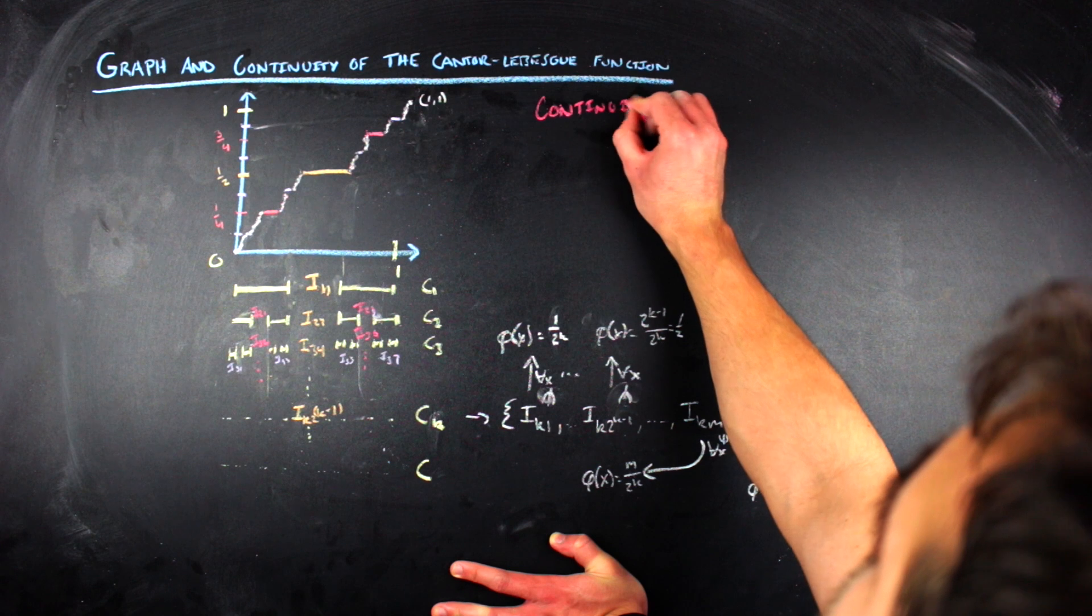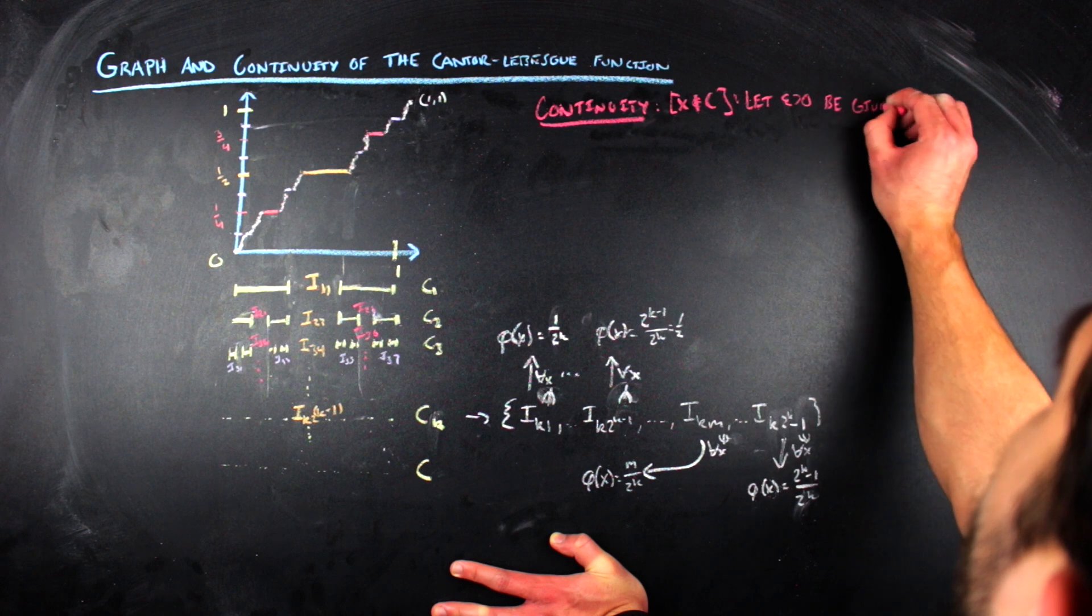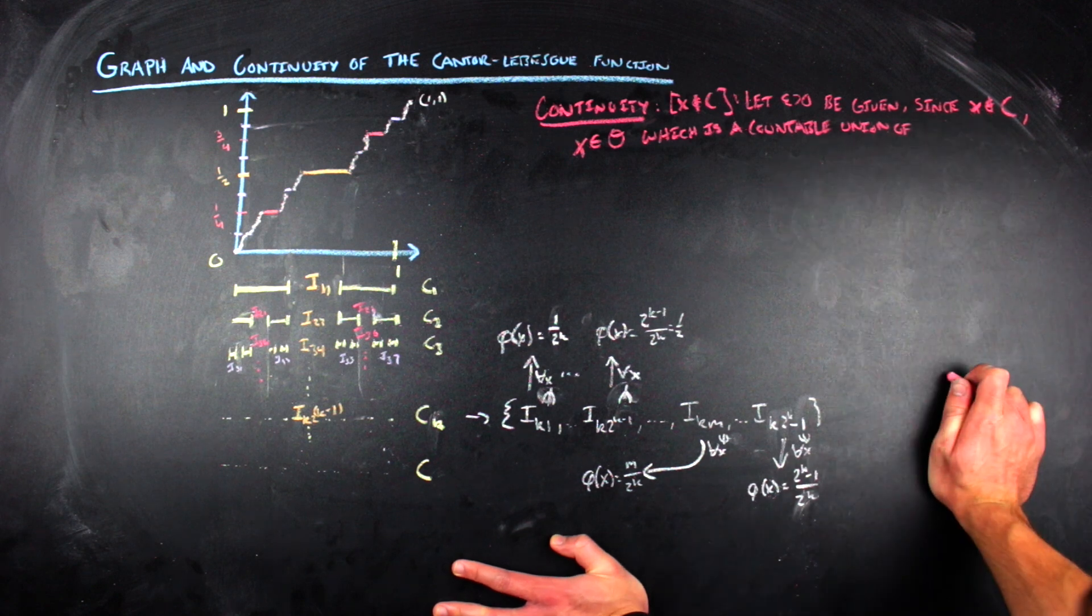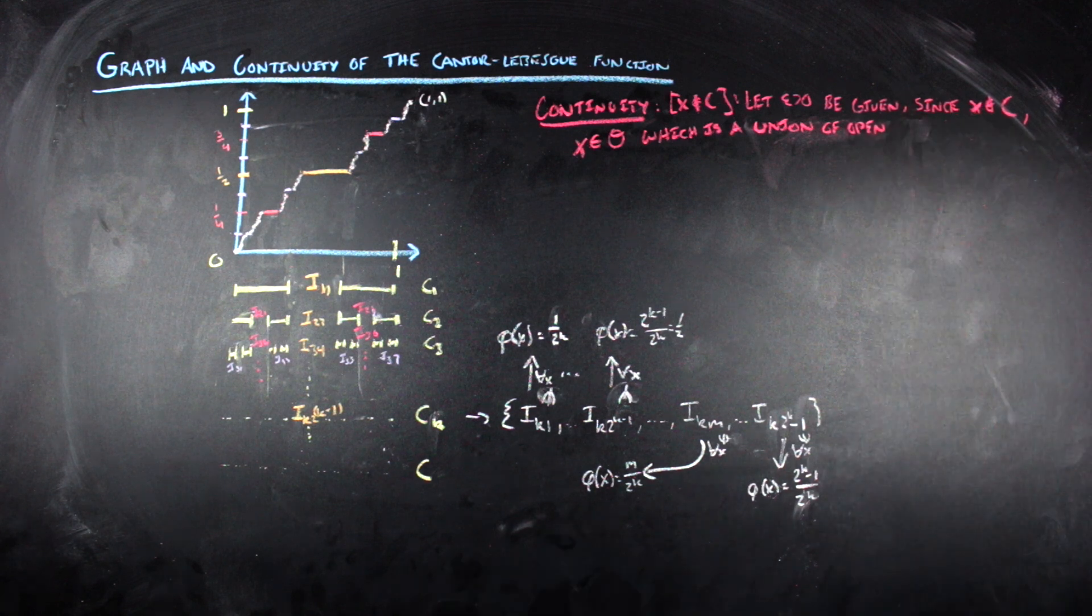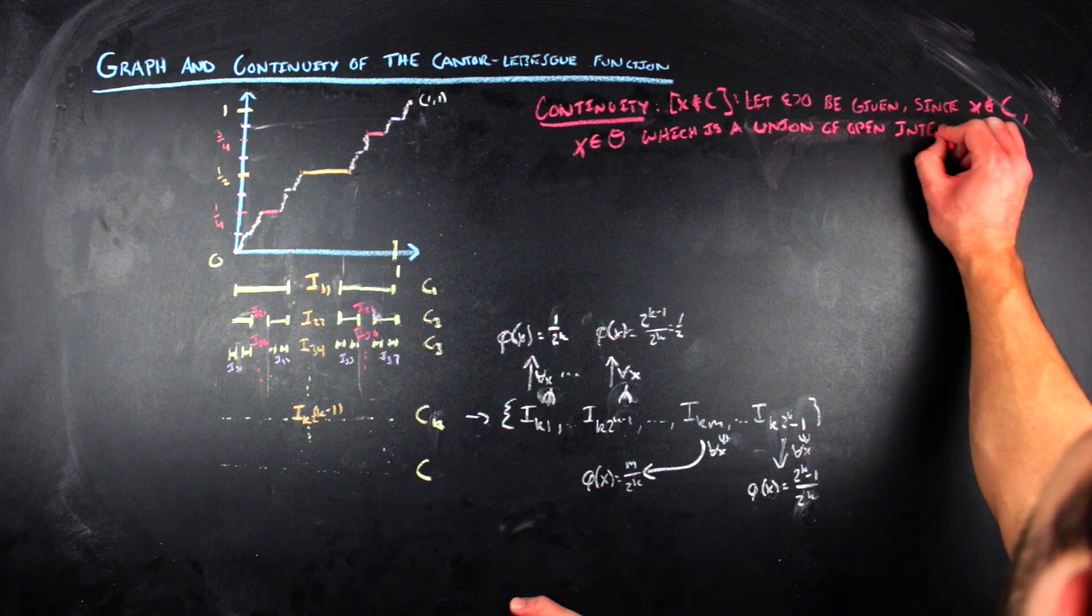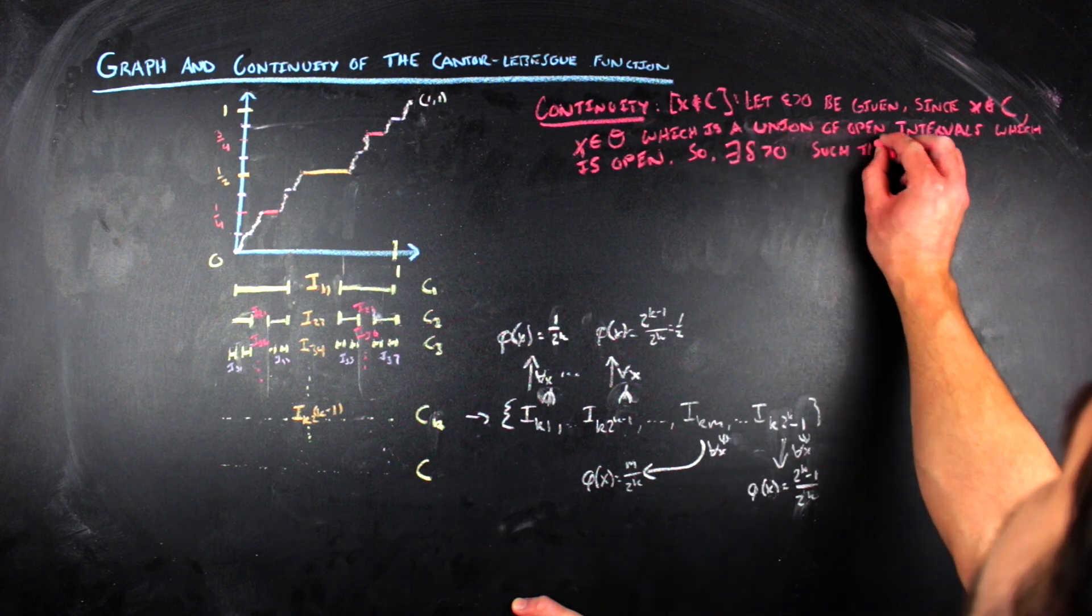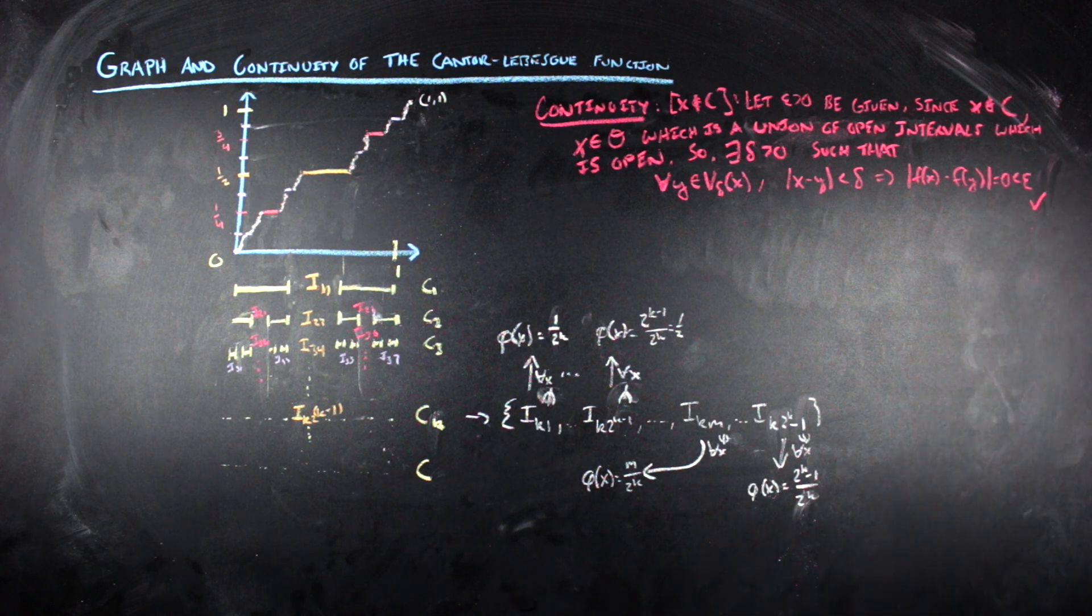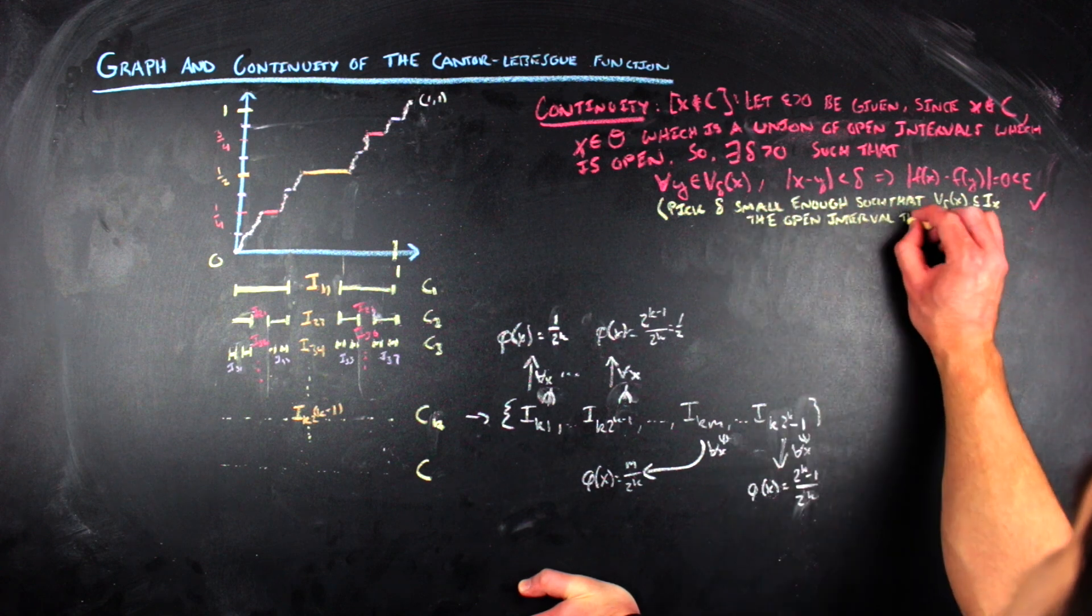This idea that in the kth step and the mth interval removed by that step, the value of the Cantor-Lebesgue function will just be m over 2 to the k is core to the following argument that the Cantor-Lebesgue function is a continuous function. So first let's talk about continuity at points that are not in the Cantor set. Then for any epsilon greater than 0, there is some delta neighborhood around our point such that every point in that neighborhood is mapped to a constant. That is, every point in this open interval of radius delta is in one of those plateaus in the graph. So we satisfy the epsilon-delta condition for continuity.